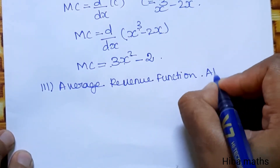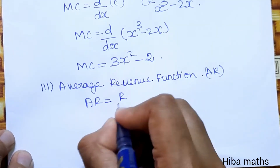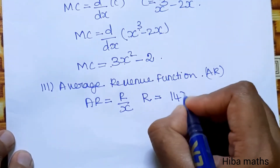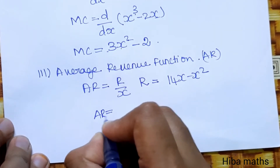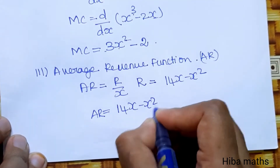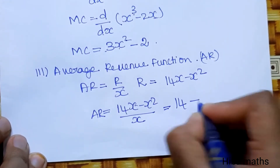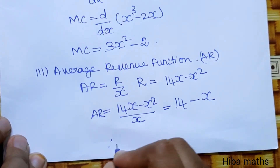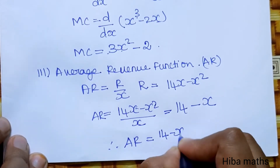Average revenue function AR is denoted as AR = R/x. The revenue function R = 14x - x². So AR = (14x - x²) / x. Cancelling x: AR = 14 - x.